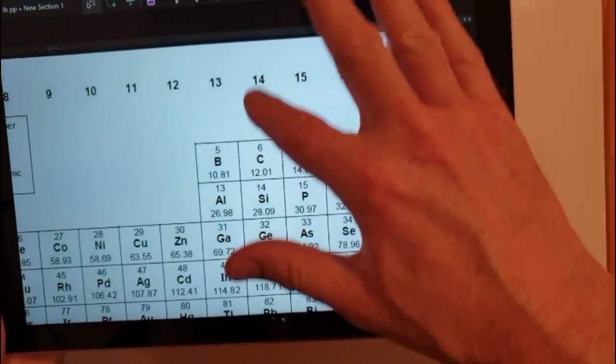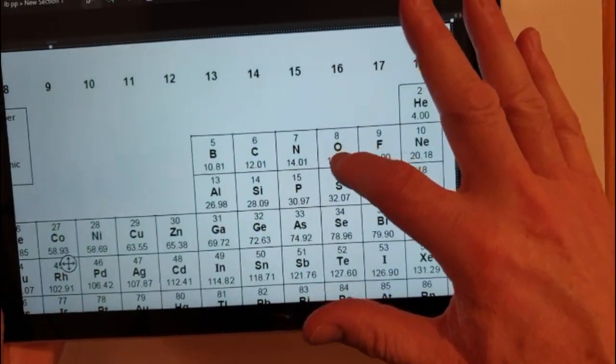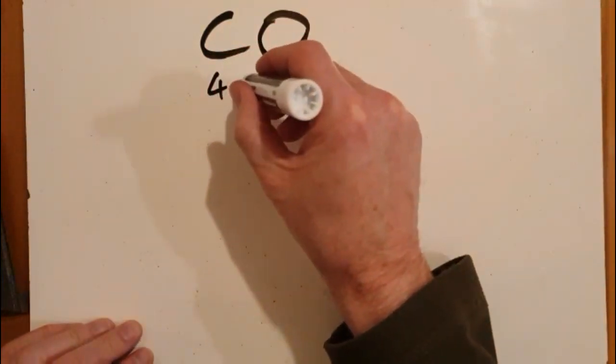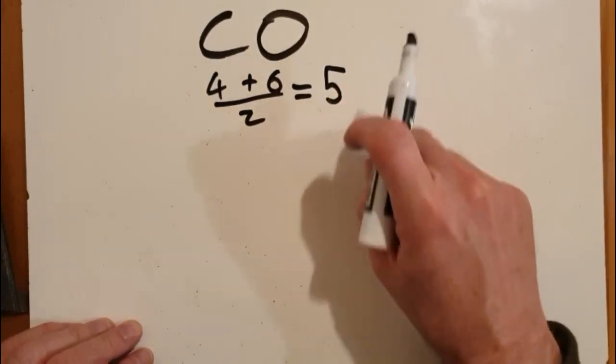So carbon is in group 14, four valence electrons, and oxygen's in group 16, so that's six valence electrons, which gives me four plus six in total valence electrons. I want to know the pairs, so that's going to give me five pairs of electrons.